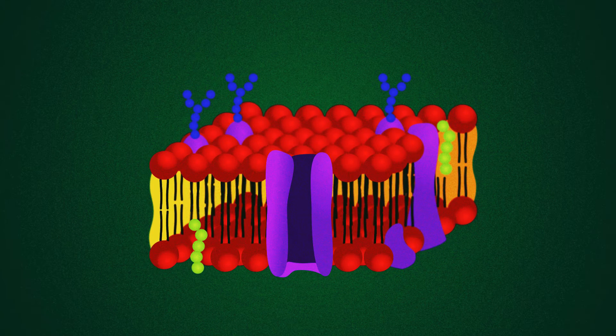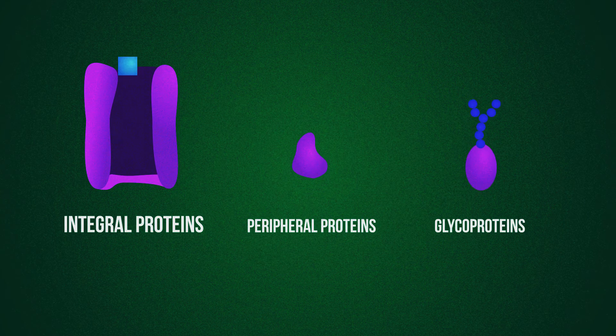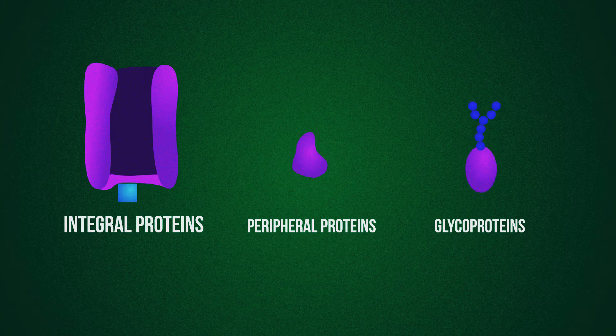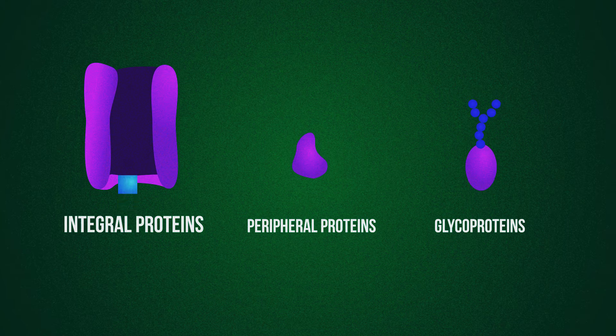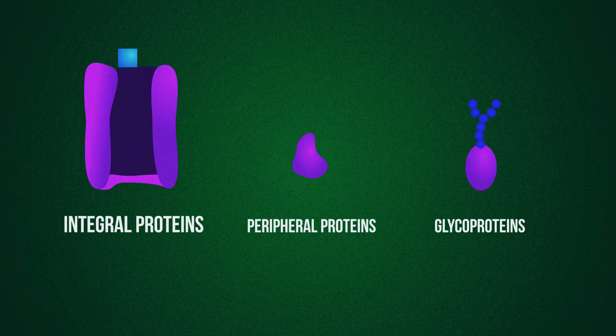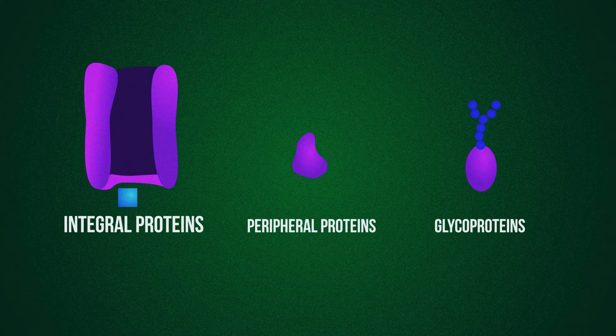And the third main molecule, the proteins. These come in different types. The integral proteins help transport large molecules across the cell membrane. Molecules can be transported in either direction, in or out, and they can go passively down their concentration gradient through protein channels or against the gradient, being actively pumped by protein pumps.